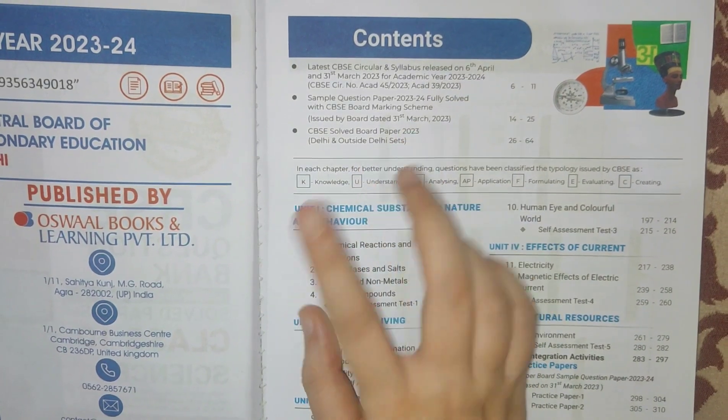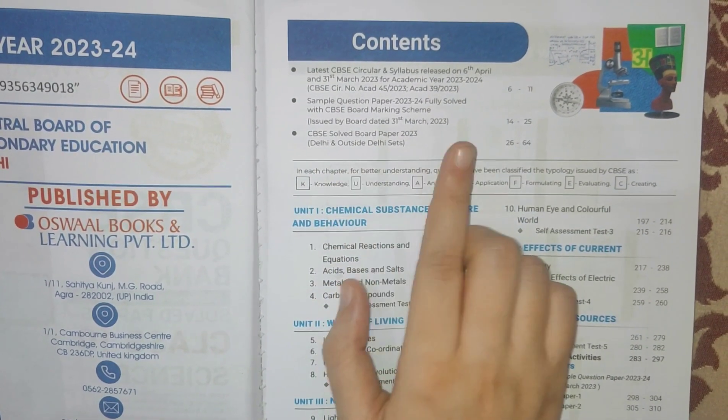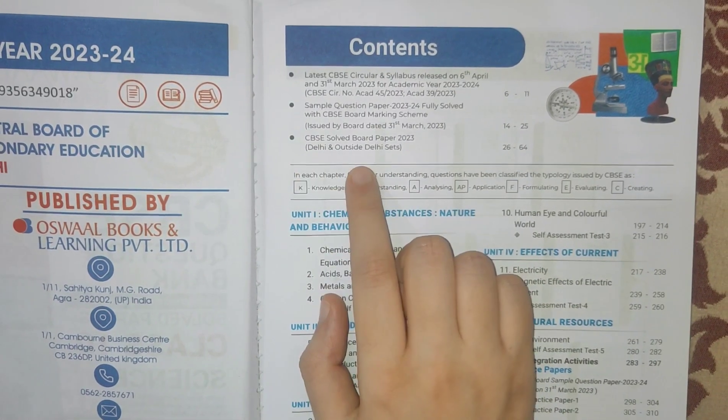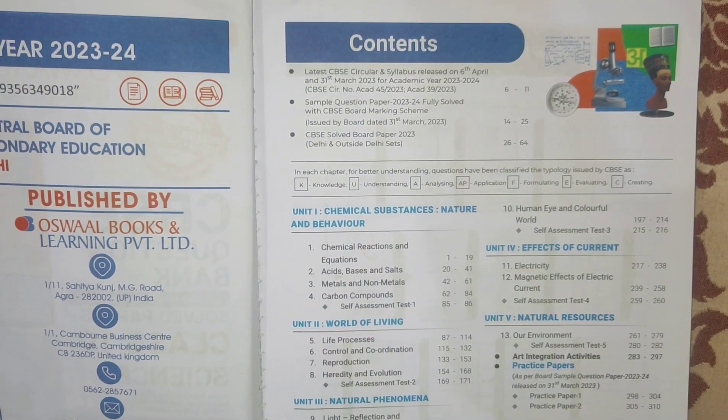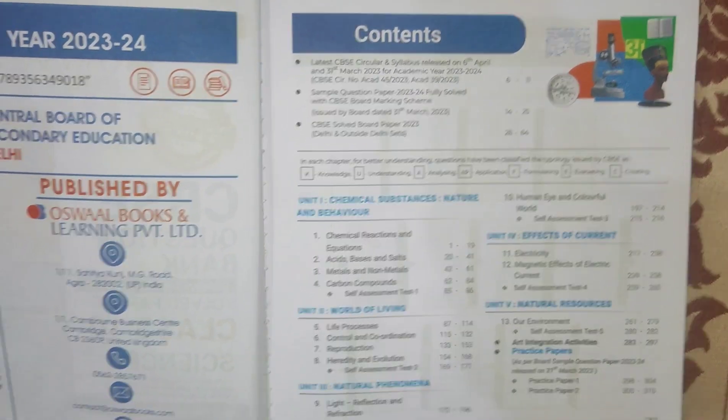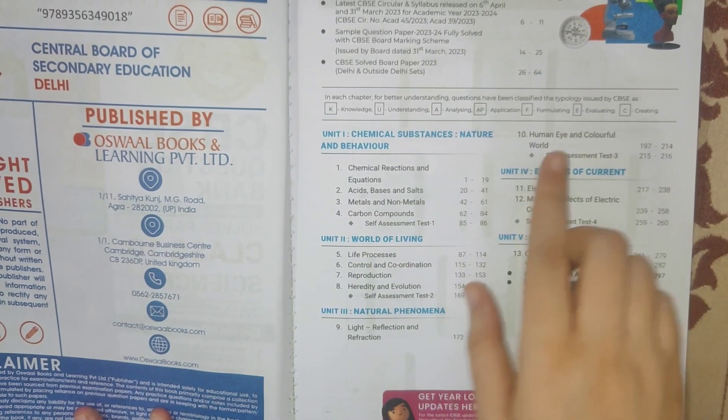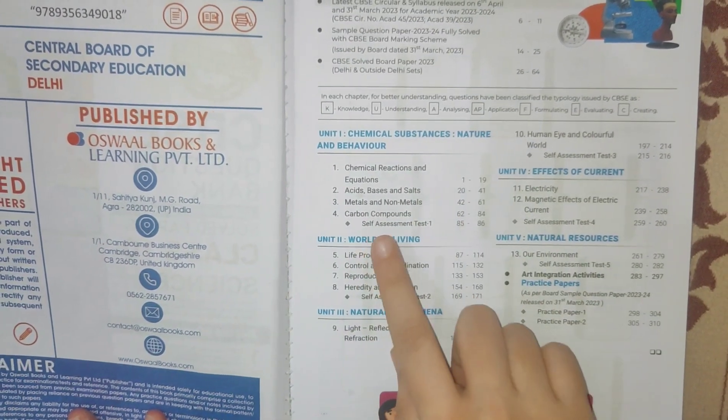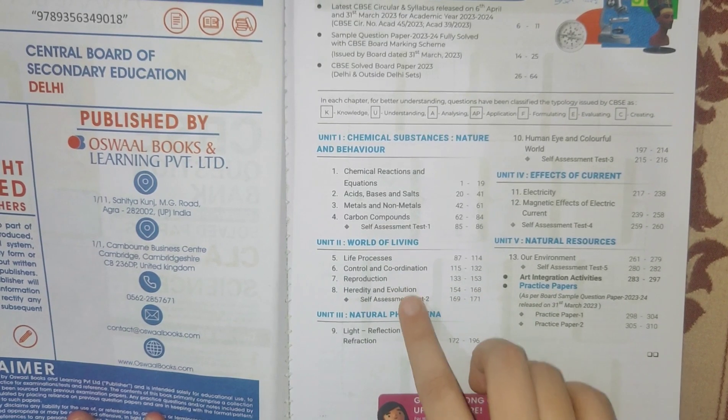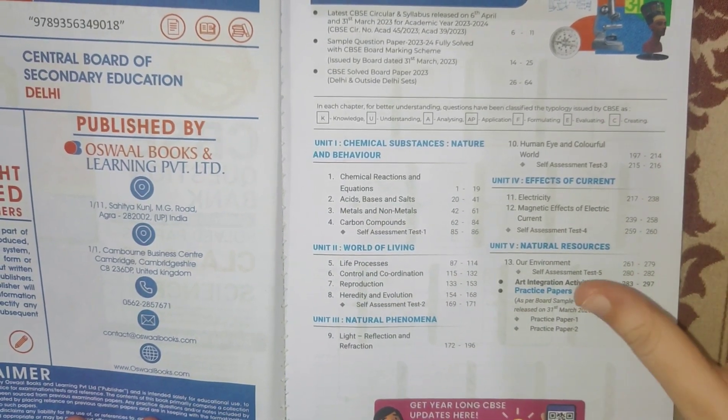Marking scheme is a very important thing if you're practicing your sample papers. Then you'll have these solved papers of last year from Delhi and outside Delhi. The entire syllabus is divided into units - we have five units. From the content page, I can tell you that after each unit you will have one self-assessment paper. One, two, three, four, five - you'll be having five of them for each unit.